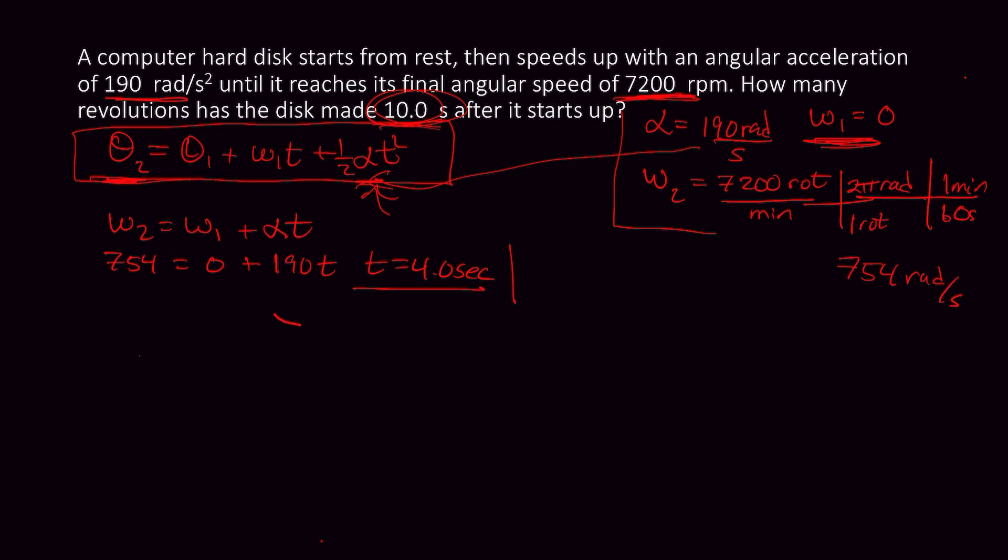So what you're going to have to do is θ2 equals 0 plus 0t. W1 is 0 plus 1/2 times 190. Now, watch how to do it. I don't say 10 seconds, but 4 seconds squared, because it's only going to accelerate for 4 seconds. So 0.5 times 190 times 4 squared gives me 1,520 rads. But that's for the first segment.